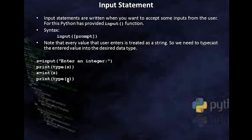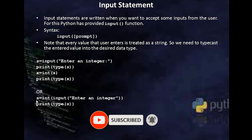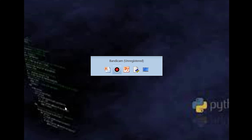Now if I print the data type of x, it will be integer. Suppose if I do both operations in one statement: because of the input statement, a prompt message 'enter an integer' will come, you'll enter a value, that value will be entered as a string, that string will be given to int(), int() will typecast it and return it as an integer. Now if I check the data type of s it will be integer. Let's see this demonstration in the Python interpreter.